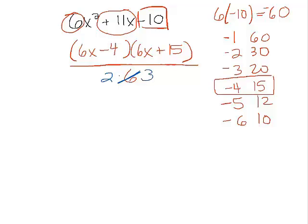Let's break it up into 2 times 3. This way, I can divide the 6x minus 4 by the 2. And the 6x plus 15 over the 3. So let's see what we get.